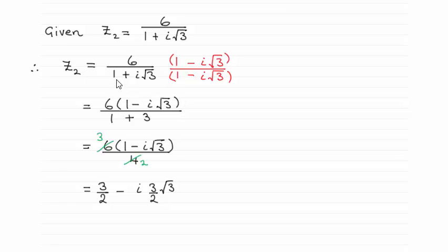When expanding the bottom, it's essentially the difference of two squares. We have 1×1 = 1, then 1×(-i√3) = -i√3, and 1×i√3 = i√3. Those two middle terms cancel out, giving 0.